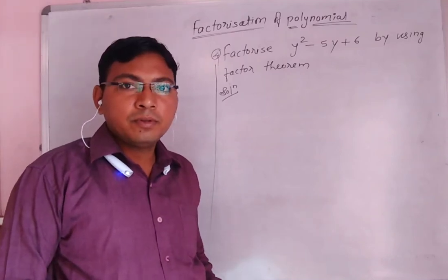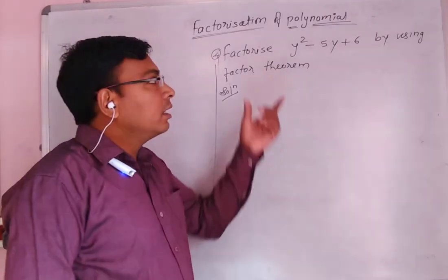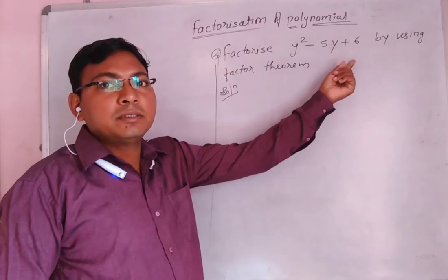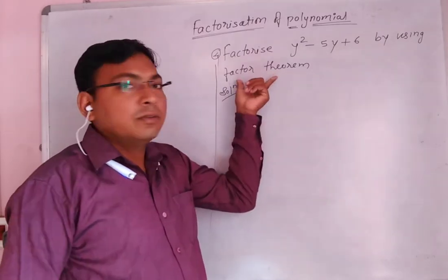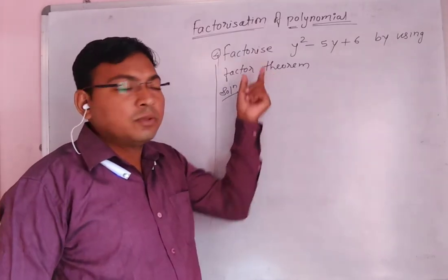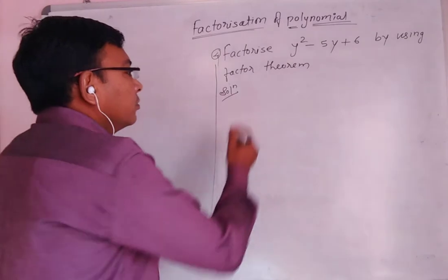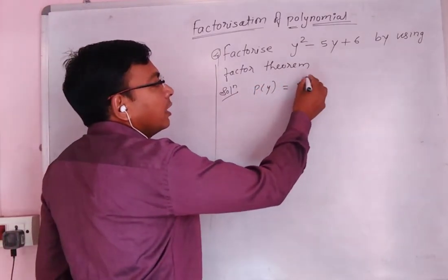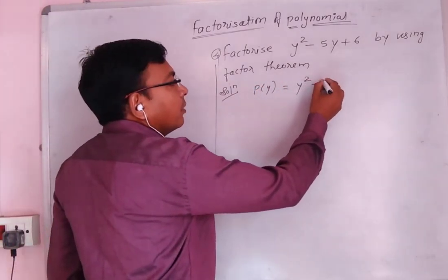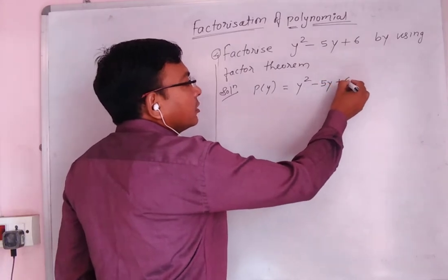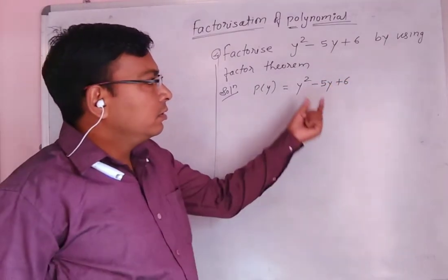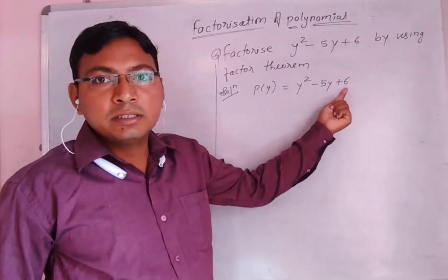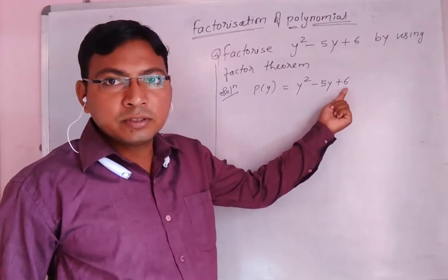Fourth problem: Factorize y squared minus 5y plus 6 by using the factor theorem. So, p of y is equal to y squared minus 5y plus 6. Here, the constant number in this polynomial is 6.